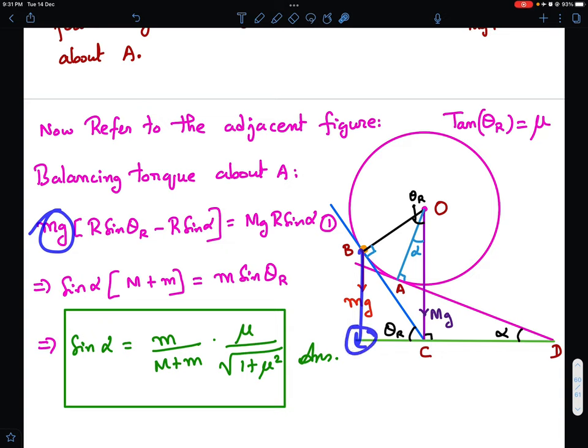Small mg, that's this force. And R sin theta repose minus R sin alpha, that is the horizontal distance, should be equal to capital Mg times capital R sin alpha. Now I can just rearrange this equation to find the value of sin alpha. So sin alpha into capital M plus small m, this m will go there, equals M sin theta R and then you get sin alpha as M upon M plus m into sin of theta repose. Now what is sin of theta repose? So you see tan theta repose is mu. So sin theta repose is mu upon square root of 1 plus mu square.